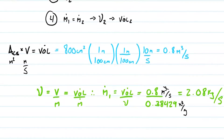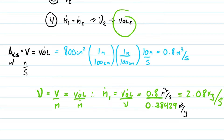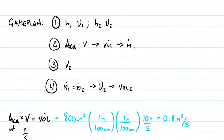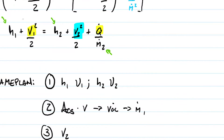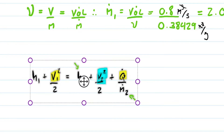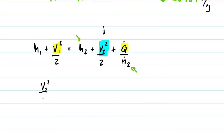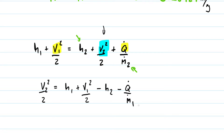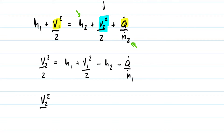Now that we know the mass flow rate, and by continuity the mass flow rate at the outlet is the same, we can find velocity two. I'll use the energy balance equation for the nozzle and solve for v2. Rearranging, v2² over 2 equals h1 plus v1² over 2 minus h2 minus the heat loss rate divided by the mass flow rate.